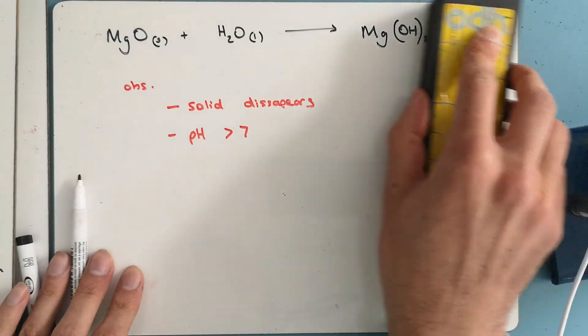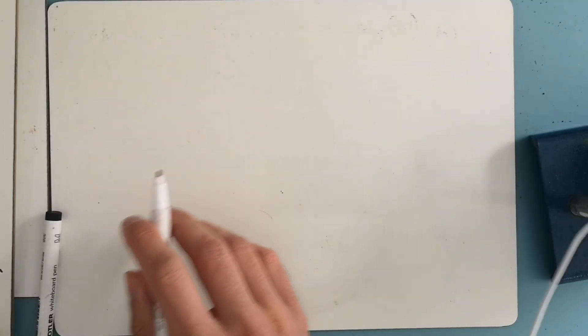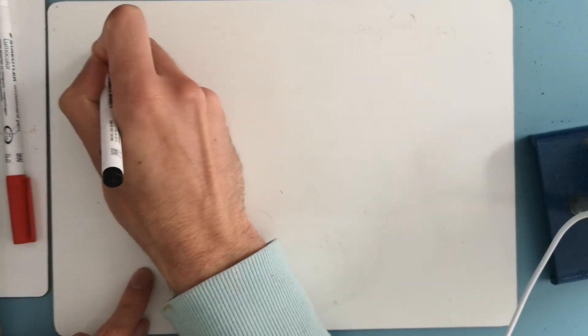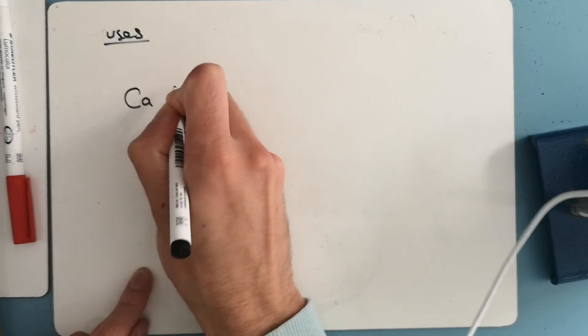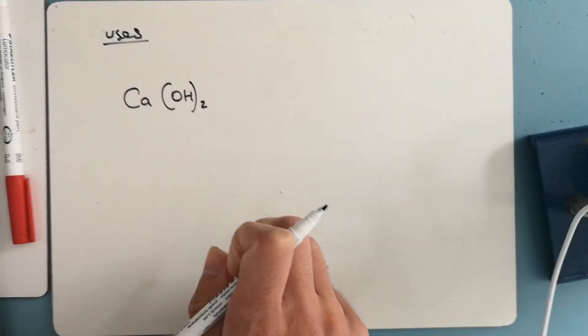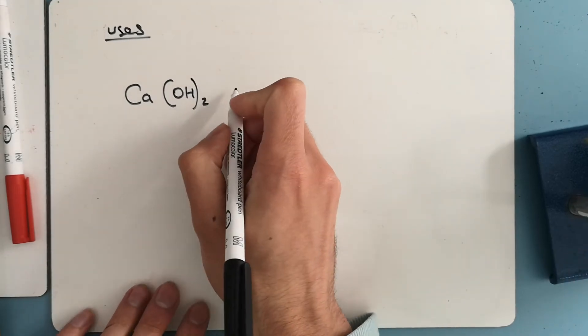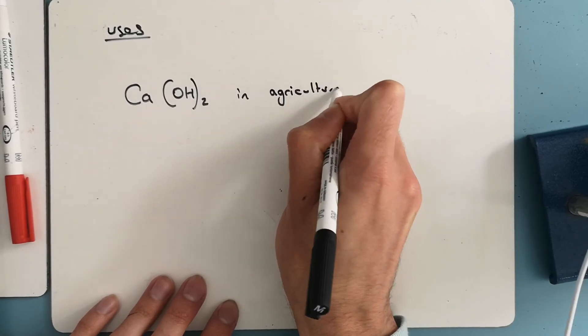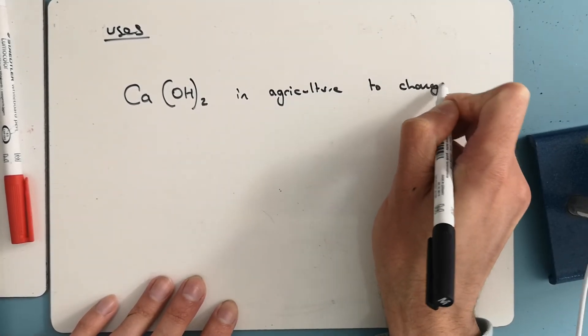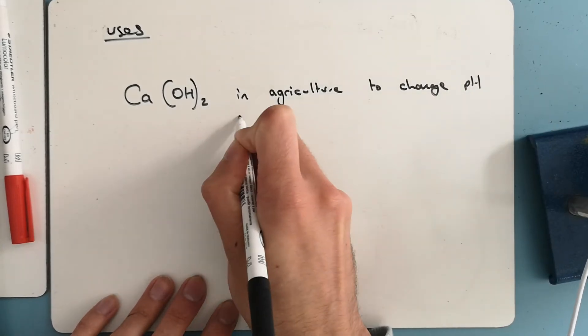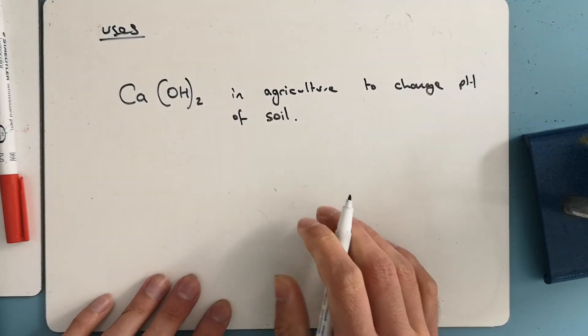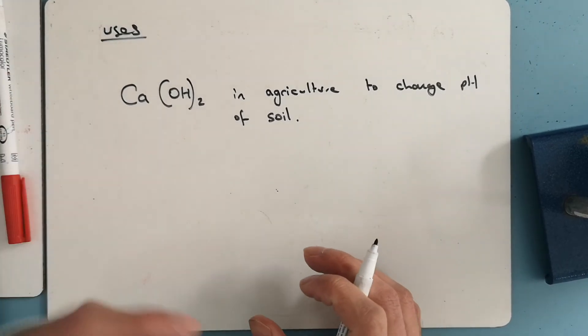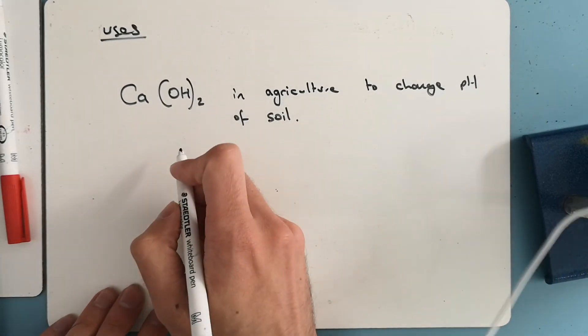Final part of group two I'm going to cover is their uses. Because of this property of creating pH above seven, calcium hydroxide can be used in agriculture to change pH of soil. Some crops grow better in high pH, some in low pH. We can use calcium hydroxide to raise the pH of soil.